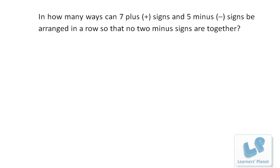Friends, before we proceed further, I would just like to discuss one more concept. In how many ways can seven plus signs and five minus signs be arranged in a row so that no two minus signs are together?